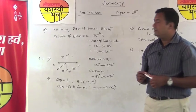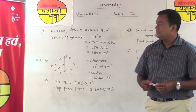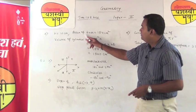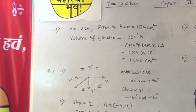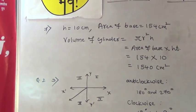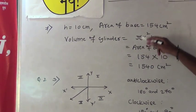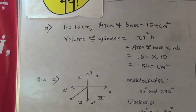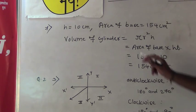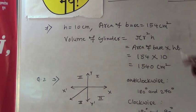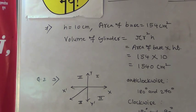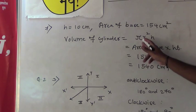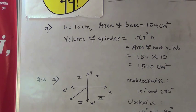In question 1 of the prelim paper, one question asks to find the volume of a cylinder when the base area and height are given. The volume of cylinder is πr²h, but πr² is the area of the circle — the base area of a cylinder is circular. So write volume = base area × height, and directly substitute the given base area of 154 cm² and height of 10. Don't waste time finding the radius from πr², then finding the radius, and then applying the volume formula again.